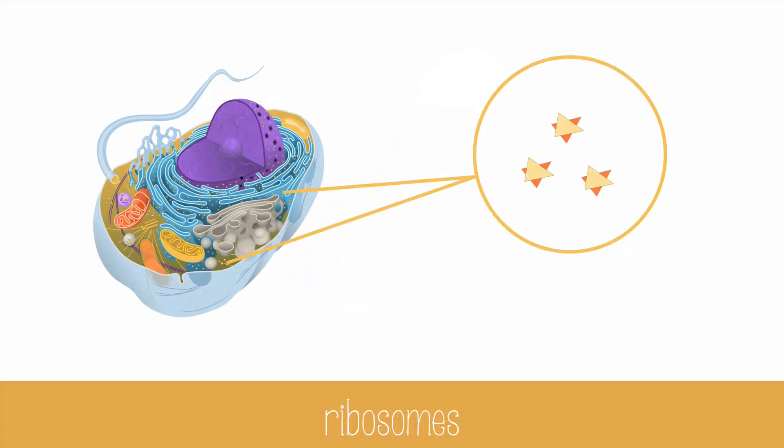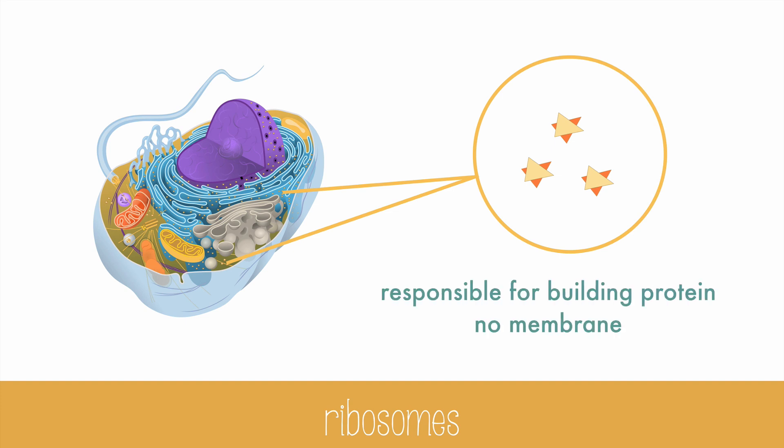Ribosomes are small structures that are responsible for building protein. They have no membrane like other organelles, and are just made of protein and RNA. You can find ribosomes on the rough ER or floating around in the cytoplasm.